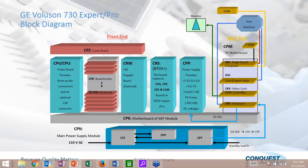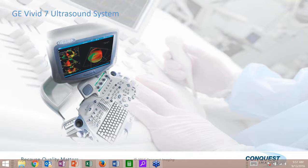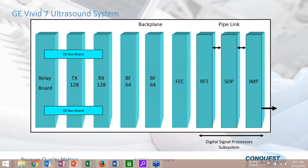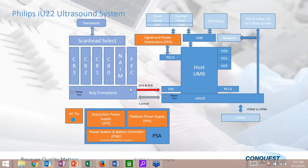Looking at the GE Voluson, it has a slightly different architecture: main power supplies, a beamformer that sends and receives signals from the body, a CPU, and a back end to process all signals. The GE Vivid 7 similarly has a front end, back end, and display. The Philips IE33 has channel boards for transmit and receive, a front end controller, a name board for initial processing, and the UMB or EMB for final processing, all displayed on screen, with power supplies at the bottom.